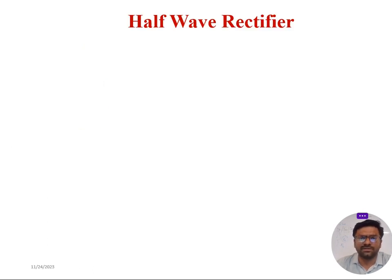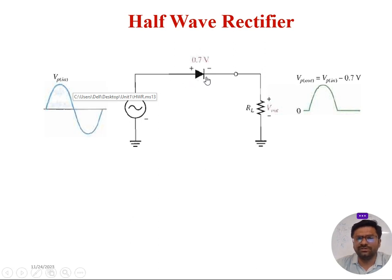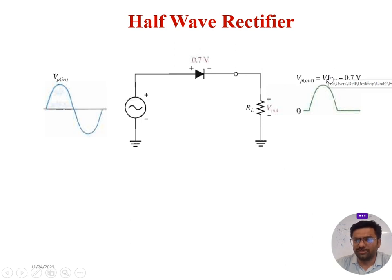A half wave rectifier is a diode-based circuitry which consists of an AC input signal given to a diode, and the diode output is given to a load. Across the load we can observe the output waveform. For an ideal diode, the output voltage is equal to input voltage for the positive cycle.